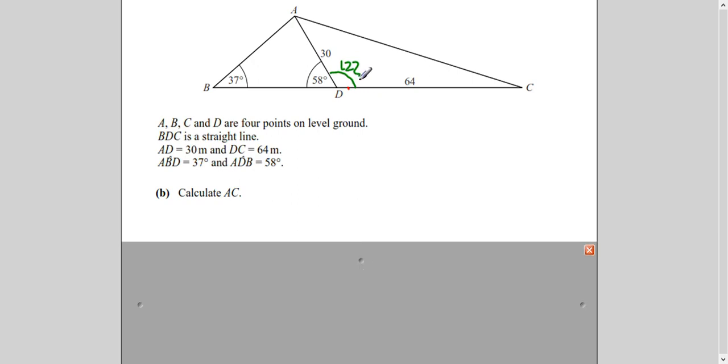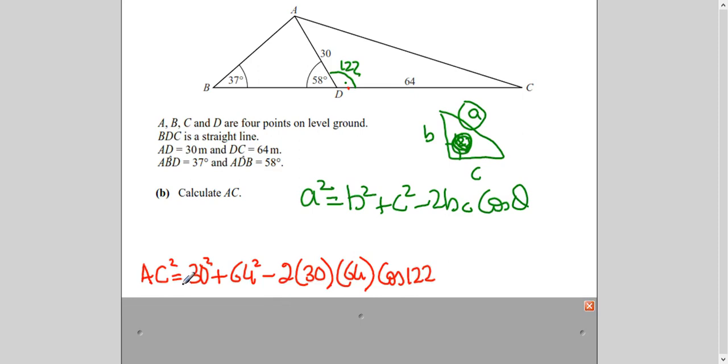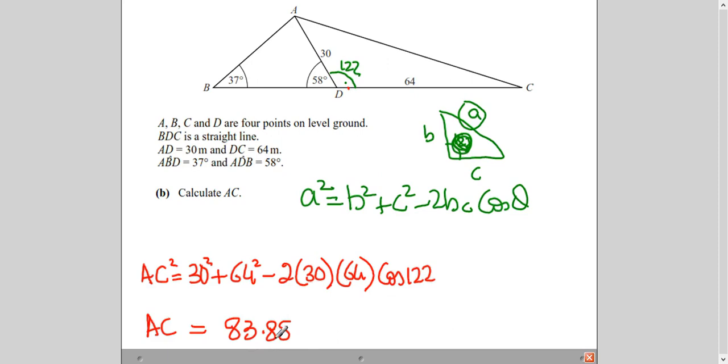Now if you remember, cosine rule says, if you know two sides and angle between them, then if you can recall, let me just write it here. For example, this is A, B, C, and this is 122, for example. So if I have to find this out, I can make it a subject. A square is equals to B square plus C square minus 2BC cos theta. So same formula we will apply here, AC is unknown side. So I will write AC square is equals to 30 square, this side, plus 64 square, minus 2 times 30 times 64, as we have seen from the formula, and cos of 122, the angle which is between two known sides. And then simple use calculator to find out the value of AC. So it is 83.85 meter.